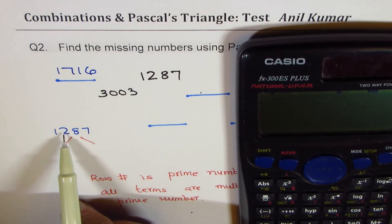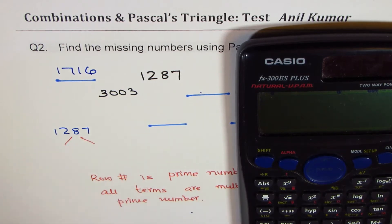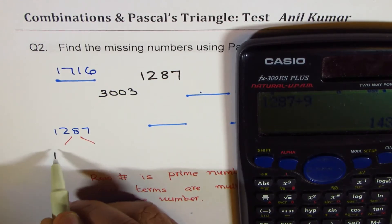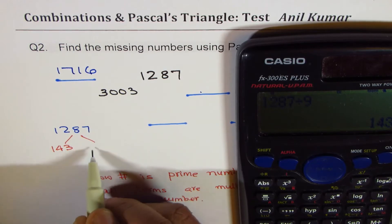So 7 plus 2 is 9, 8 plus 1 is 9. So it can be divided by 9. So we can do 1287 divided by 9 equals to 143. So we get numbers 143 times 9.